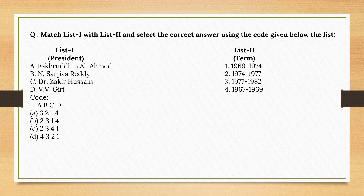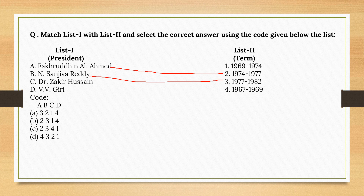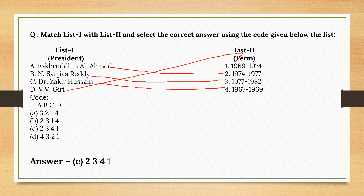Match List 1 with List 2 — match President with his or her term. Fakhruddin Ali Ahmed: 1974–1977. Neelam Sanjeev Reddy: 1977–1982. Dr. Zakir Hussain: 1967–1969 (the only President who died during his tenure). V.V. Giri: 1969–1974. So the correct option is Option C.